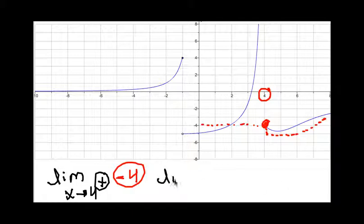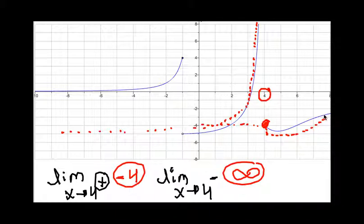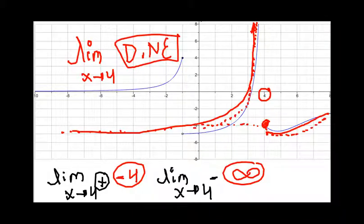What about if I'm approaching the limit when x goes to 4 but now from the left? Coming from the left, I get really close to the function approaching x equals 4, and I see that the function actually goes all the way to infinity. Since the function from the right is negative 4 and from the left it goes to infinity, the limit when x approaches 4 does not exist because the left and the right did not give me the same answer.